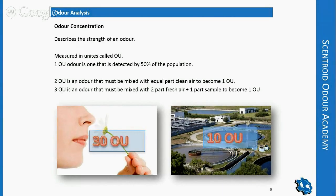Odor concentration is the most important parameter everybody talks about. It describes the strength of an odor. For example, a flower is 30 odor units, or if you live outside a wastewater treatment plant, you may be subjected to 10 odor units, although that's fairly strong and you would definitely complain. An odor unit means that sample can be detected by 50% of the population — 50% will detect it's not clean air, and the other 50% won't.